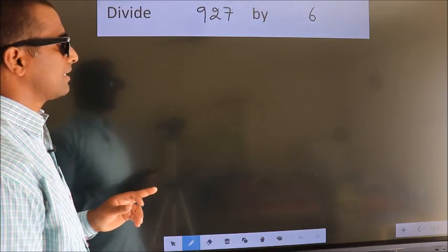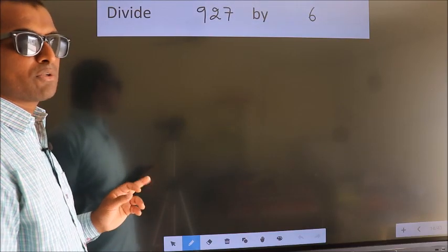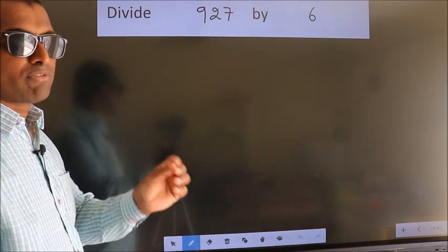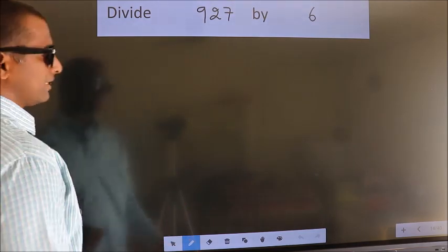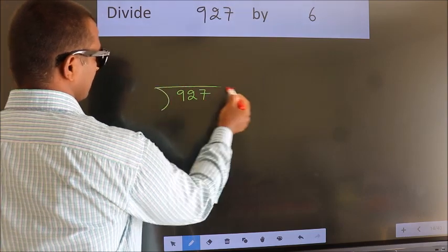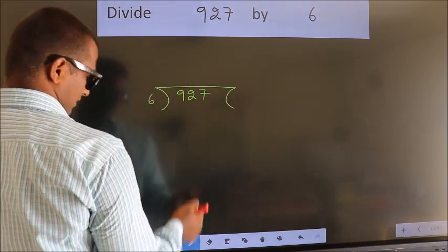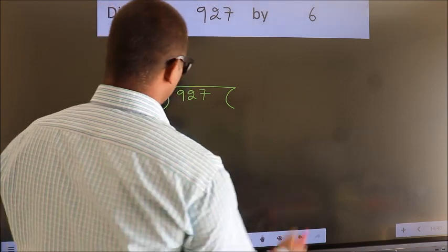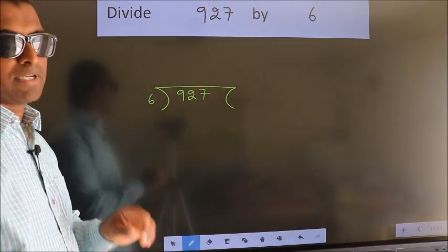Divide 927 by 6. To do this division, we should frame it in this way. 927 here, 6 here. This is your step 1.